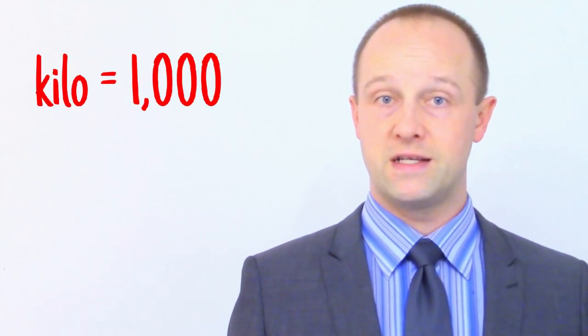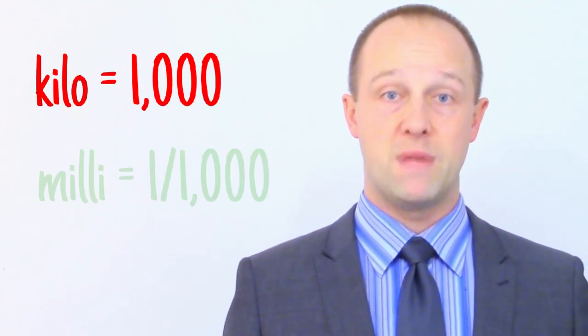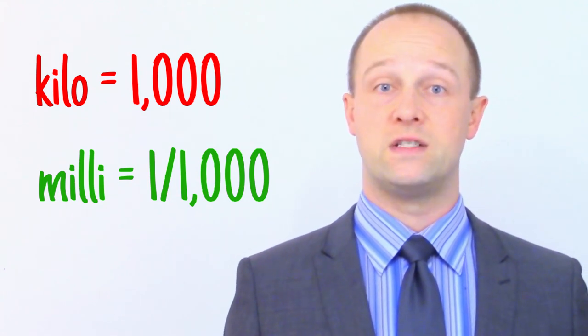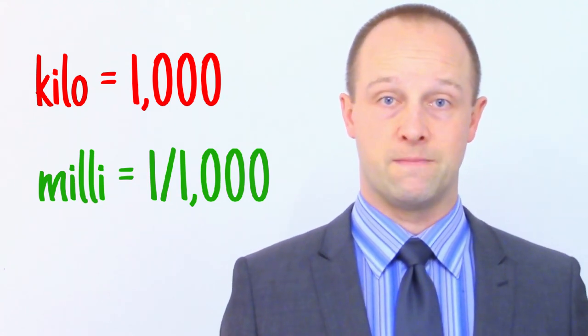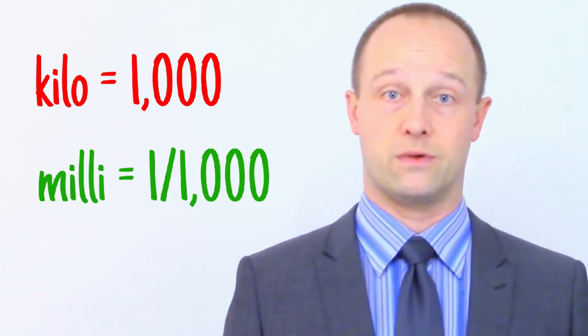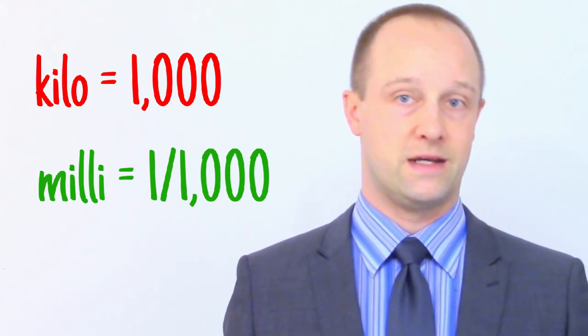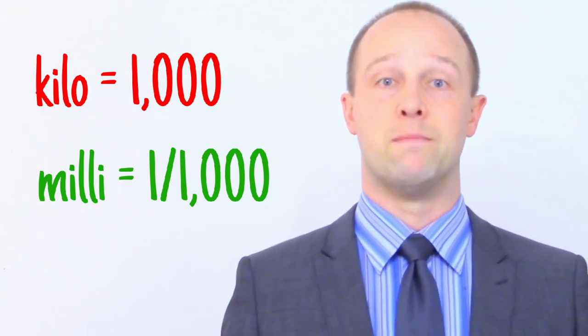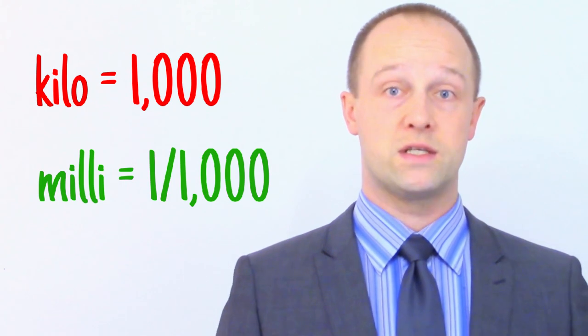All of our other prefixes increase or decrease by powers of one thousand. For example, a kilometre is a thousand metres, and a millimetre is one thousandth of a metre. This makes converting from one to the other really easy. We just multiply or divide by a thousand, or a thousand thousand, or a thousand thousand thousand, and so on.